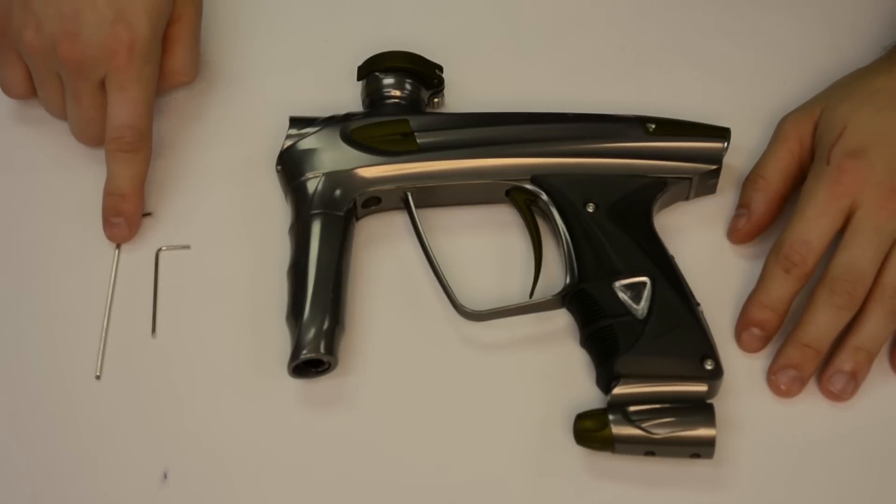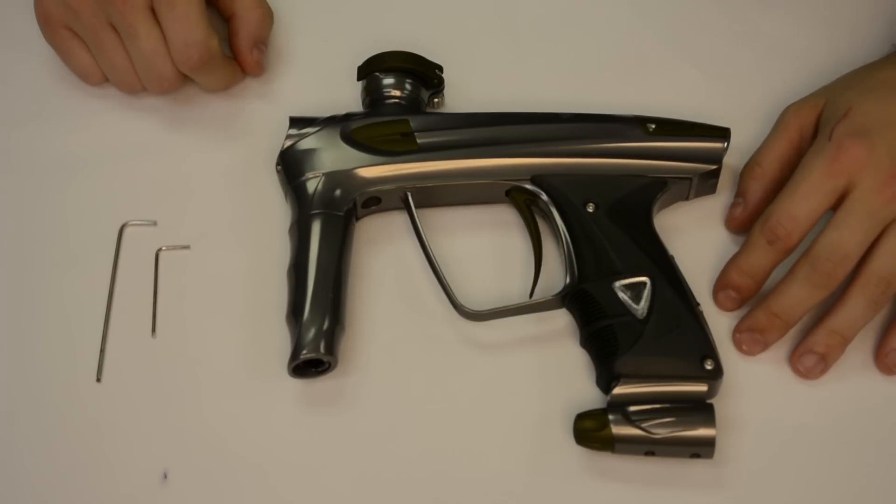To remove the feather touch screw, you will need a 5/64th allen key and a 1/16th allen key.